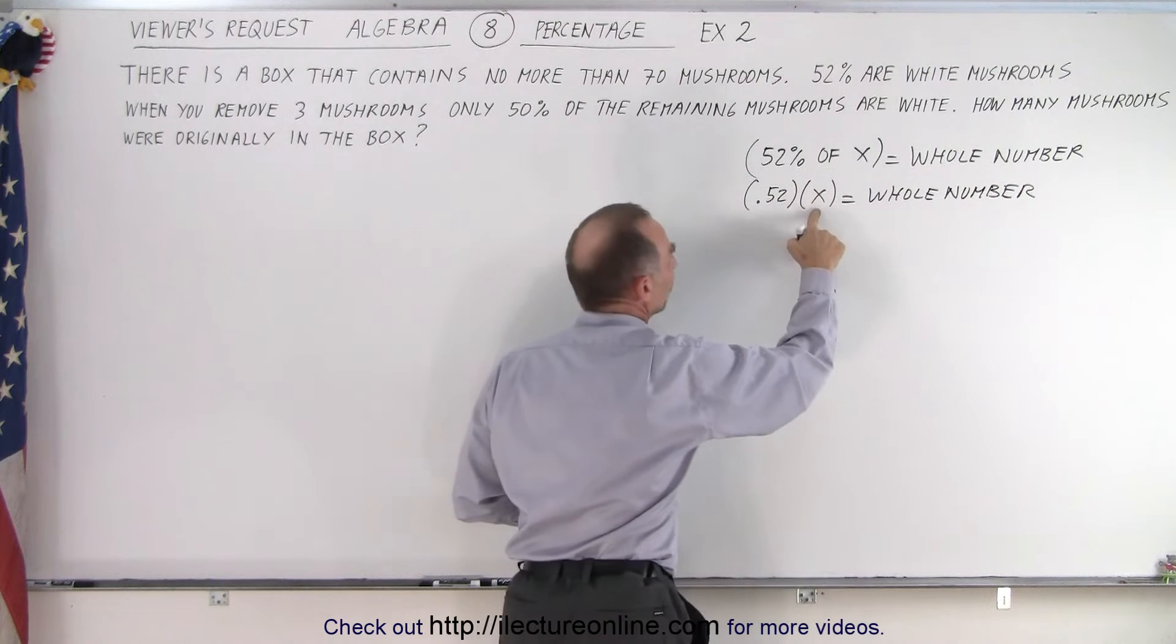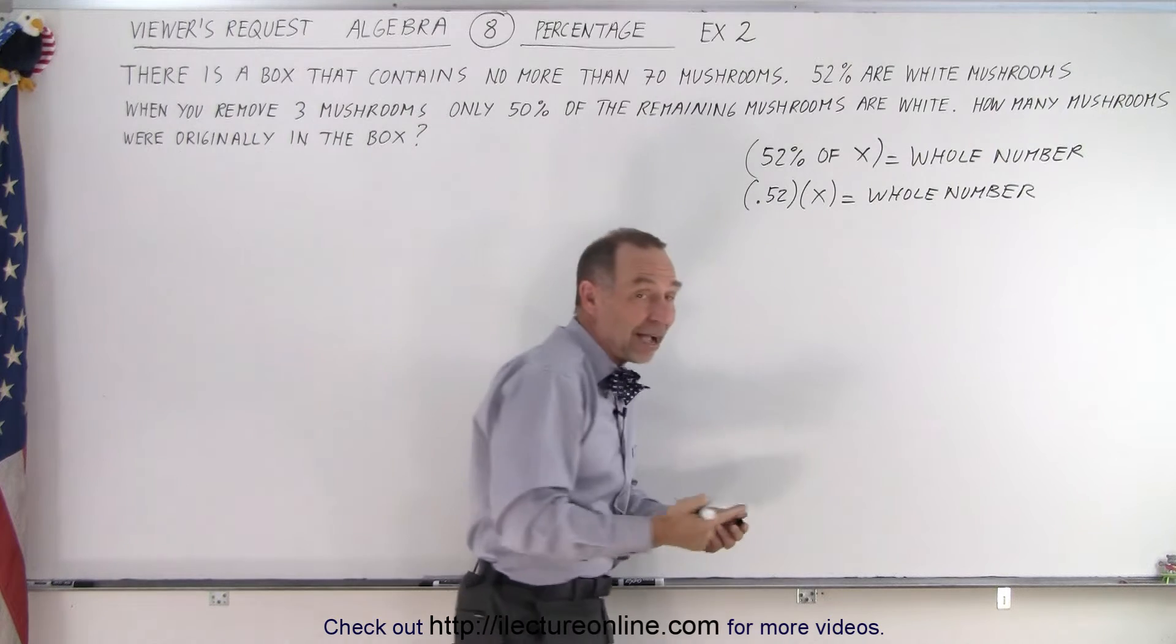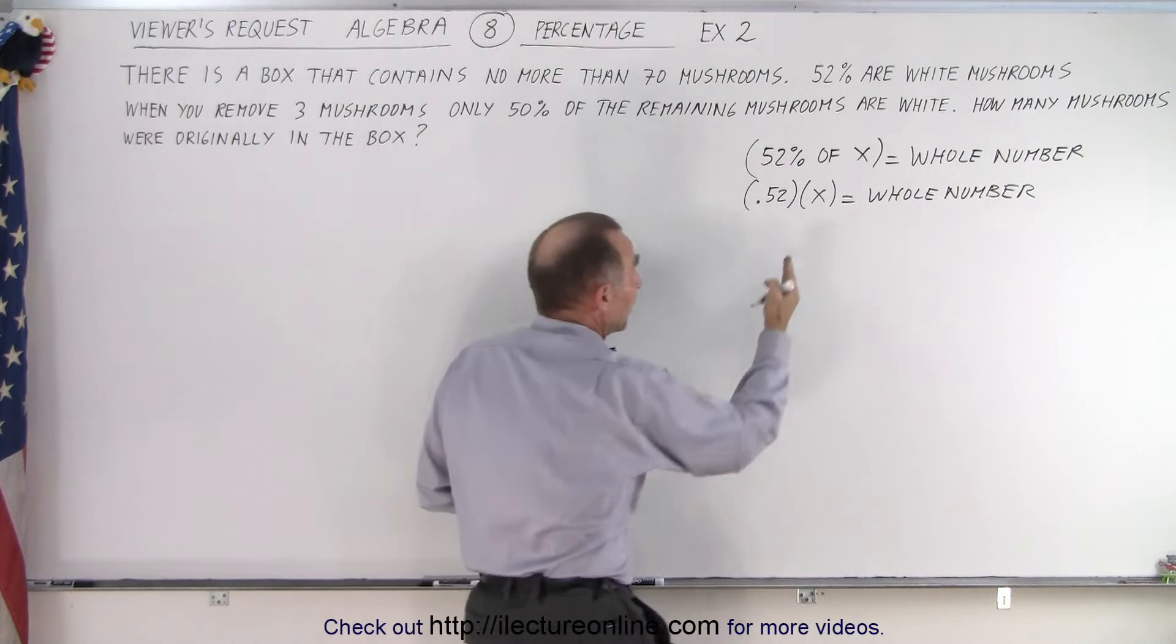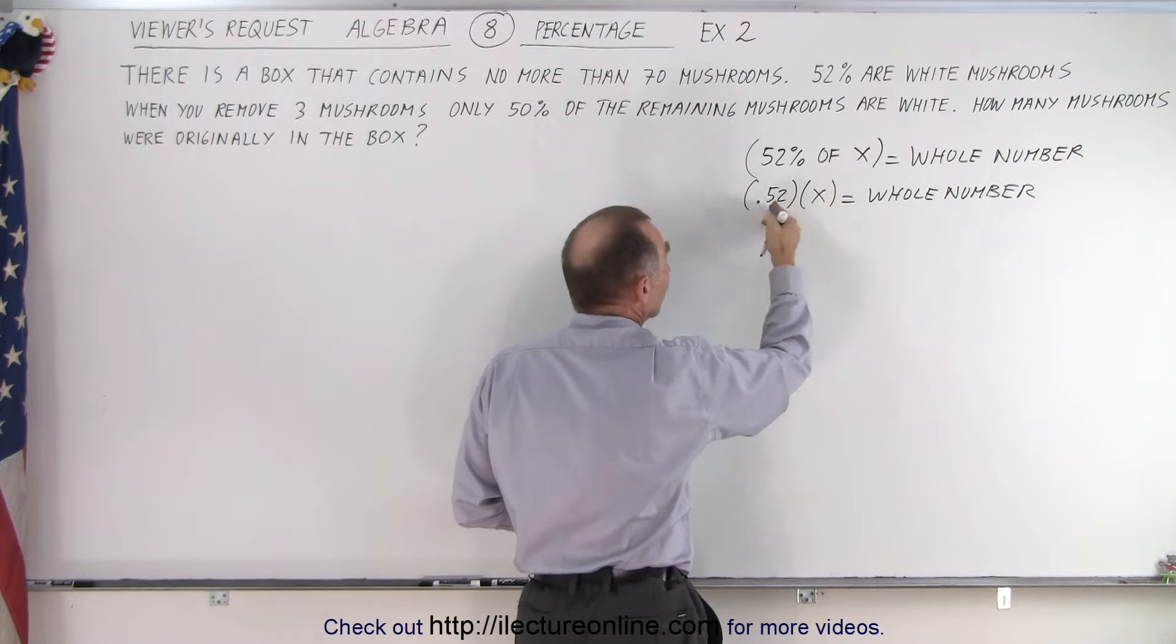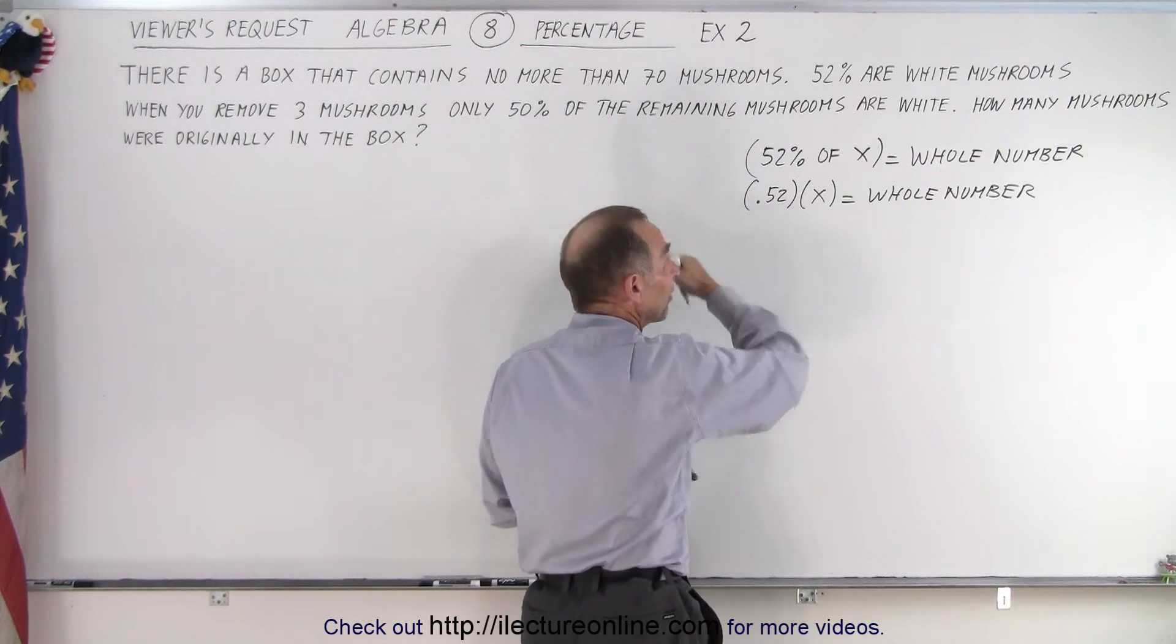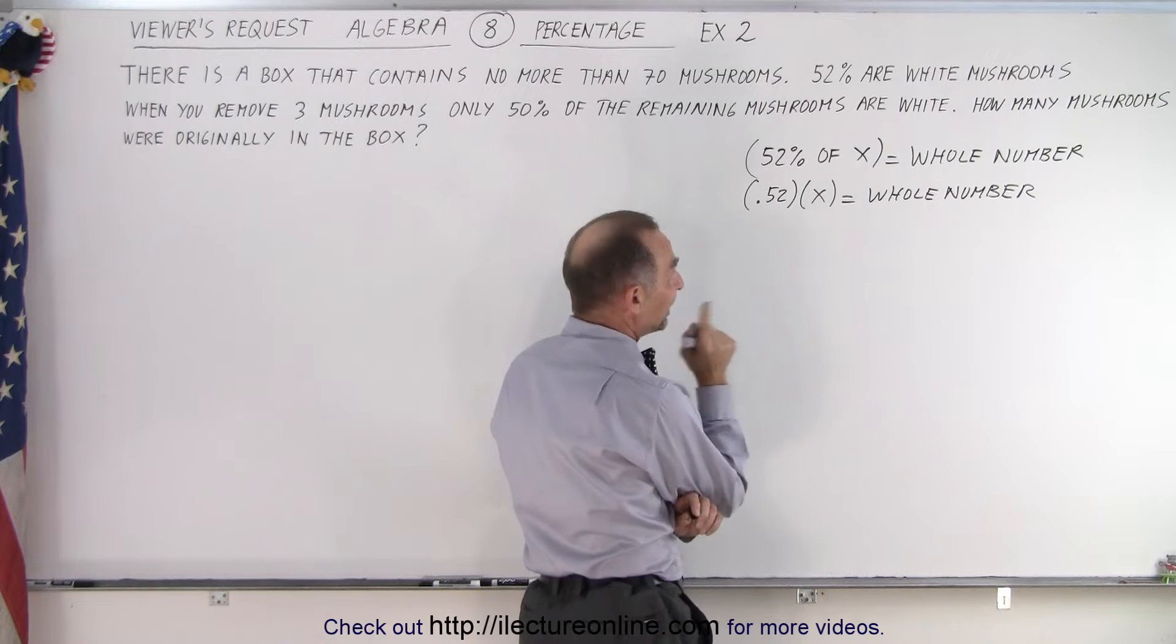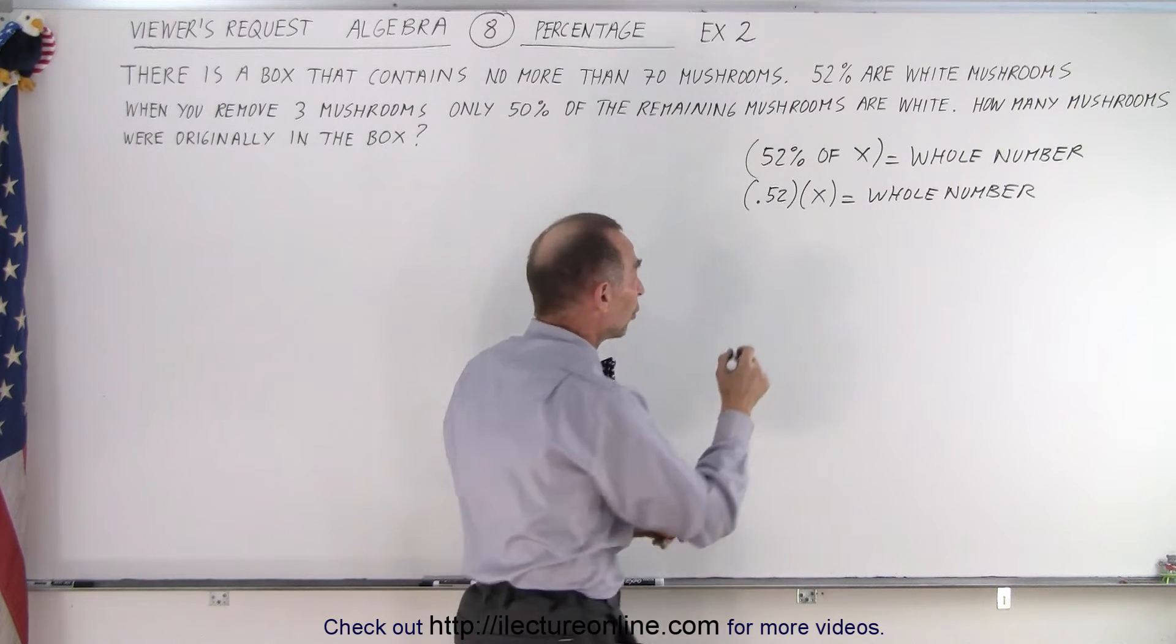And the reason is because 5 times 2 is 10, that moves the decimal place over. So essentially it's the same thing as before: 0.52 multiplied times X is a whole number. So you think that X must either be ending in a 5 or ending in a 0, so that means that 5 times 0.02 will make it 0.1 or 10 times 0.02 will make it 0.2. So it moves the decimal place over, so it needs to end in a 5 or a 0.